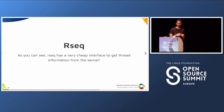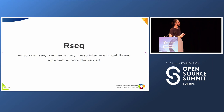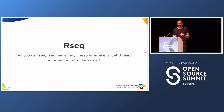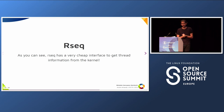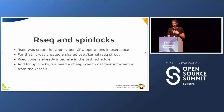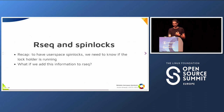As you can see, rseq has a very cheap interface to get thread information from the kernel. This is what we need — rseq creates a data structure that can be read and written both by the kernel and user space. Reading a structure is way cheaper than making syscalls. So John from LWN has suggested using rseq to solve our problem.